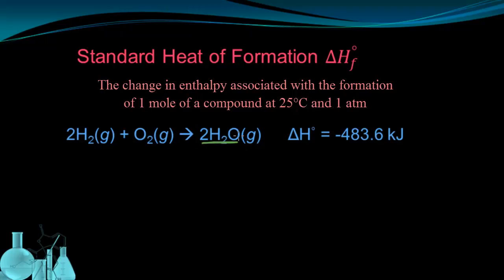Standard heat of formation is for one mole. So what I can do is I can divide everything here by two. Dividing this by two gets rid of it. I have half an oxygen. Dividing this by two gets rid of that coefficient. And I would also divide the heat data by two. And that would give me negative 241.8 kilojoules.